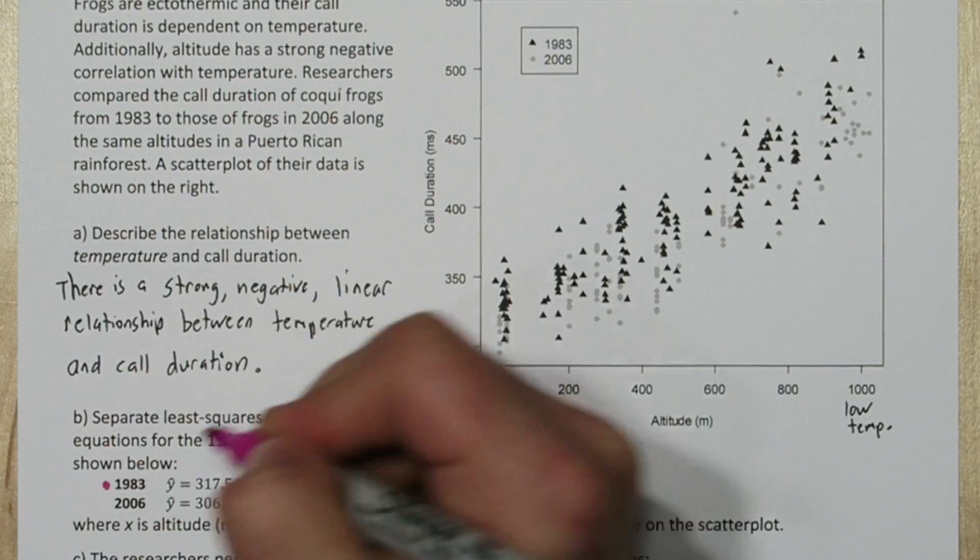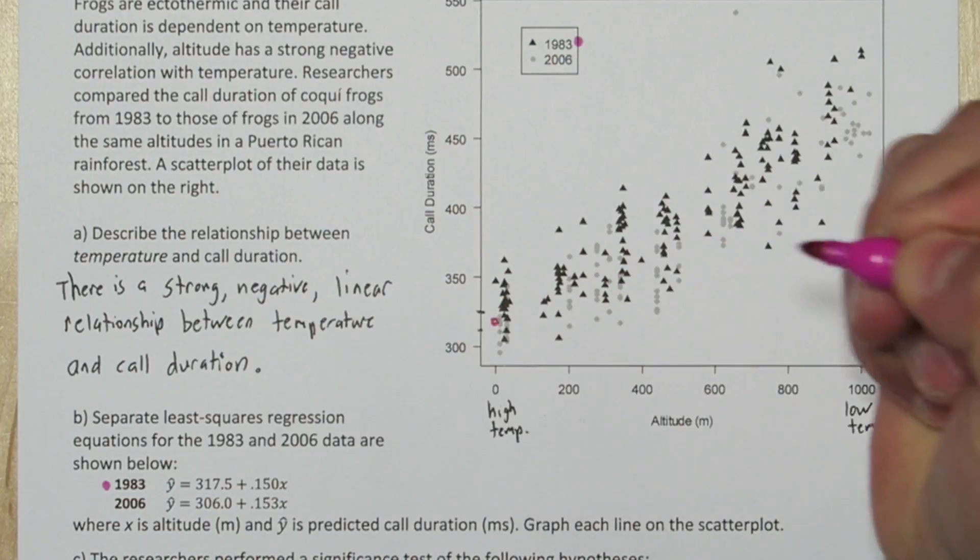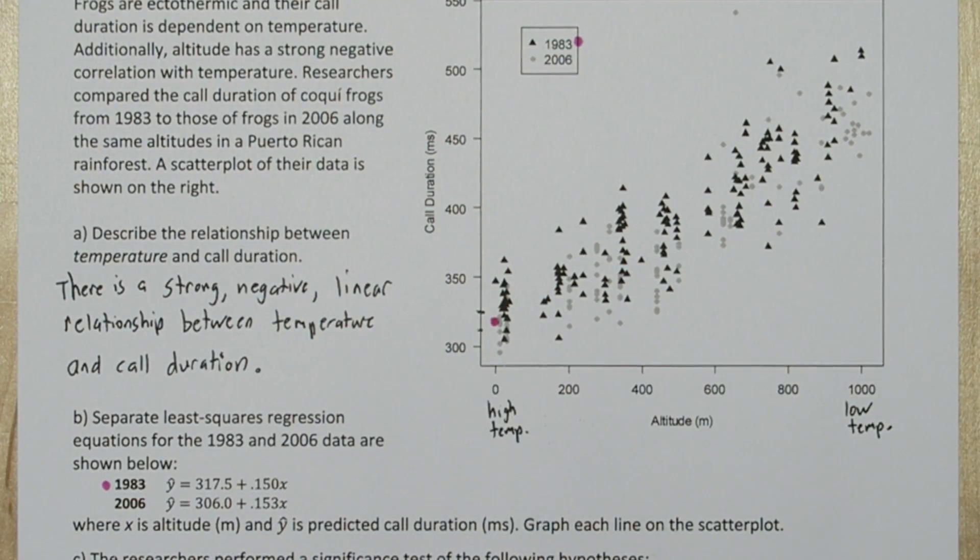For 1983 our y-intercept was 317.5, so our y-intercept's about there. Now we need another point to complete our graph, so what we're going to do is substitute in an altitude of 1000, and that will give us a point at the other end of the scatter plot.